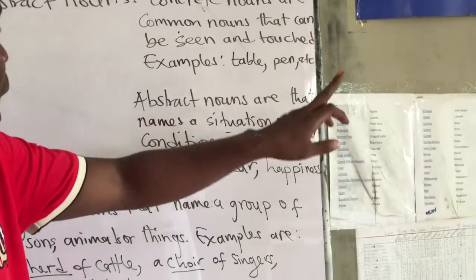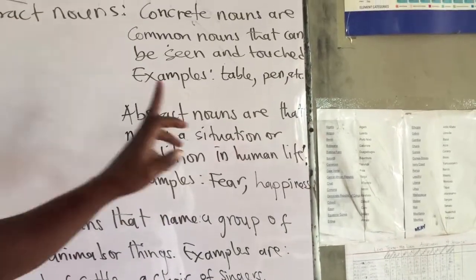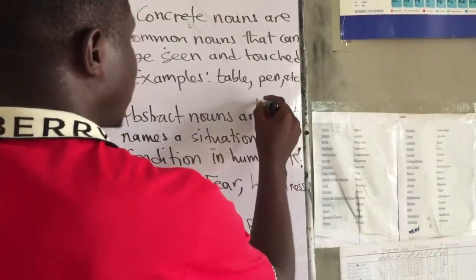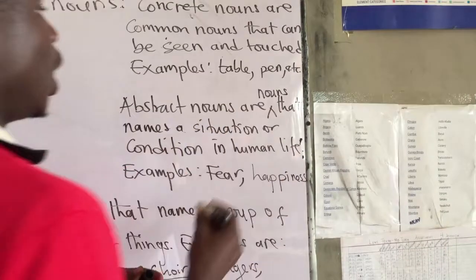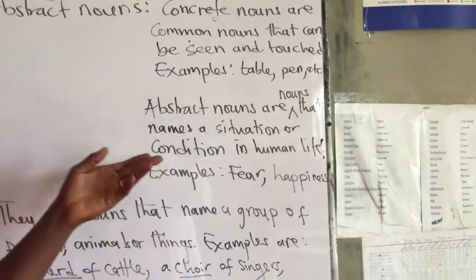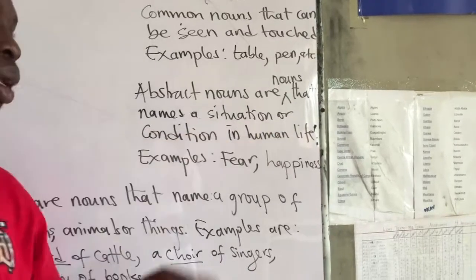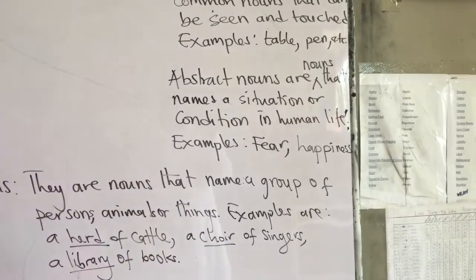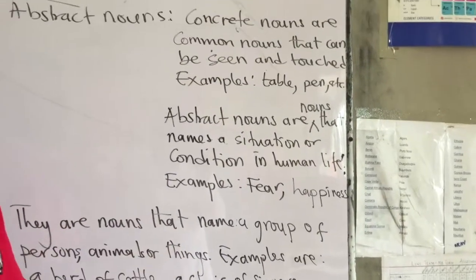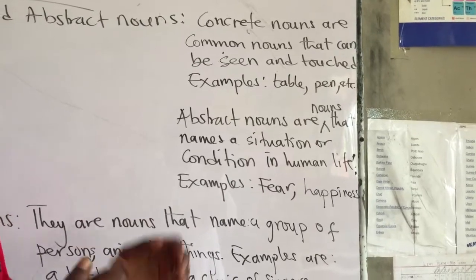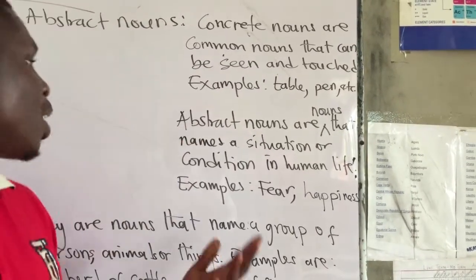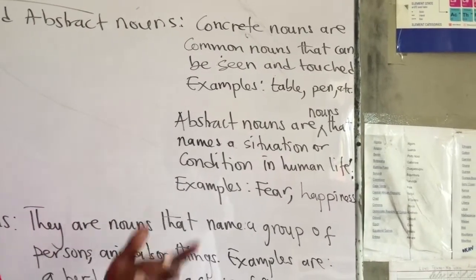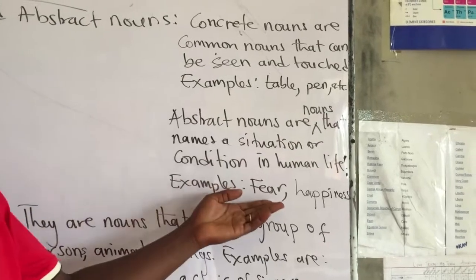Abstract nouns are nouns that name a situation or condition in human life. Sometimes we face certain conditions and find ourselves in situations — the names we give to those situations are what we refer to as abstract nouns. Basically, abstract nouns cannot be touched, but they are expressed in the form of a situation or condition. One example is 'fear.'